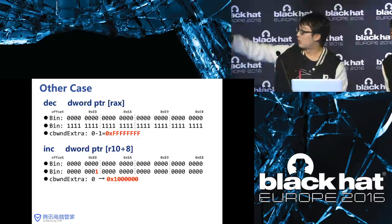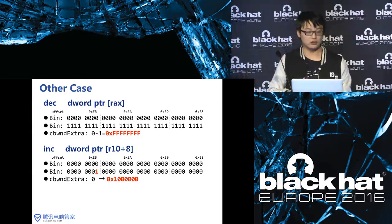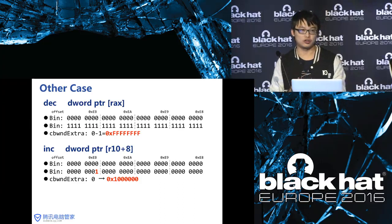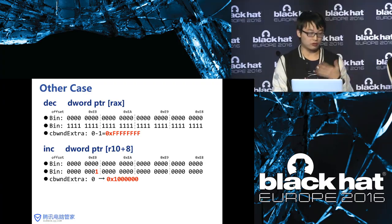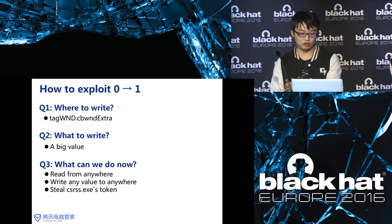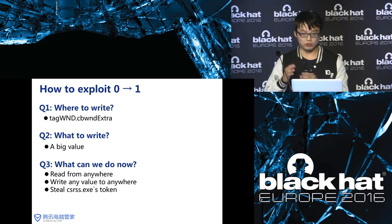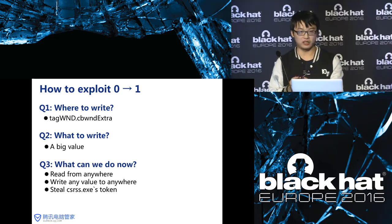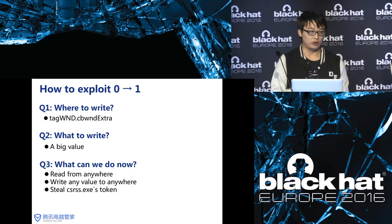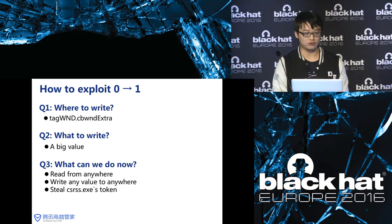There are two assembly code paths to make cbWndExtra as large as possible so we can control all data behind it. In summary: where to write — we write to cbWndExtra. What to write — we change just one bit of cbWndExtra to make it a very large size. What can we do — after that we can read from anywhere, write any value to anywhere, and steal the system process token. That is the whole procedure of our zero-to-one exploitation.